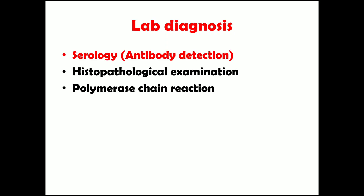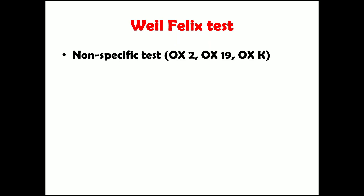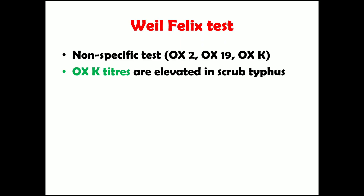The common test used for rickettsial bacteria is the Weil-Felix test. It is a non-specific test used to detect antibodies against antigens OX2, OX19, and OXK. In scrub typhus, among these three antigens, antibodies are specifically raised against OXK — so the OXK titers are elevated in scrub typhus.